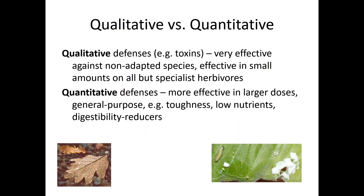One way to think about plant defenses is whether they act in small doses but are very potent to a general class of herbivores — we call these qualitative defenses. The downside is that they might actually be feeding stimulants to very specialized insects. Examples include cardenolides, alkaloids, and other very toxic compounds. Alternatively, plant defenses can be quantitative — acting in large doses against a broad range of herbivores, mostly slowing them down rather than killing them, but making them susceptible to other sources of mortality such as competition, other predators, and parasitoids.